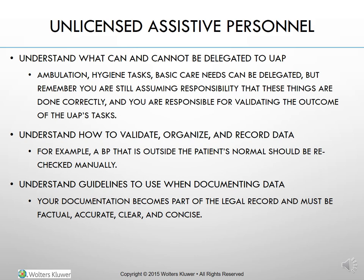Unlicensed assistive personnel can help with ambulation, patient hygiene, washing patients up, and any basic care needs can be delegated—but you are still assuming responsibility that these things are done correctly and you are responsible for validating the outcome of their tasks. For example, if you ask the tech to get a blood pressure on Ms. Smith and they come back with 70 over 30, you're going to go assess that patient yourself before calling the provider. If it really is 70 over 30, do an emergency assessment: try to wake Ms. Smith, check if she's breathing okay, get a full set of vitals, and then report that data.